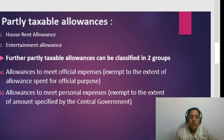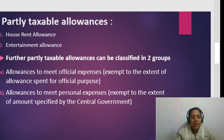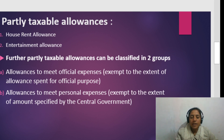For allowances to meet personal expenses, the amount is exempt up to the extent specified by the central government — that specified amount is exempt and the rest is taxable. The key partly taxable categories are HRA and entertainment allowance, which will be covered with problems in the next slide.